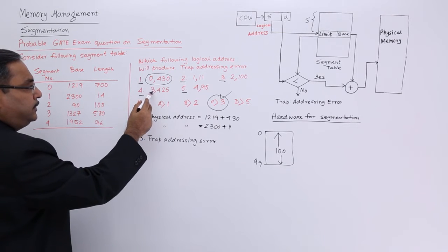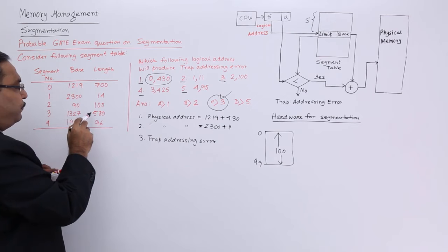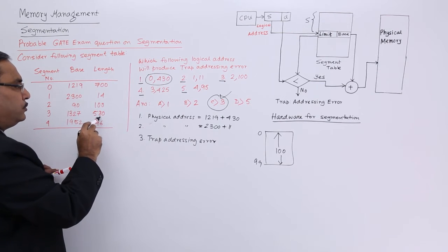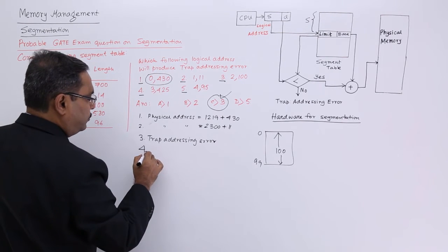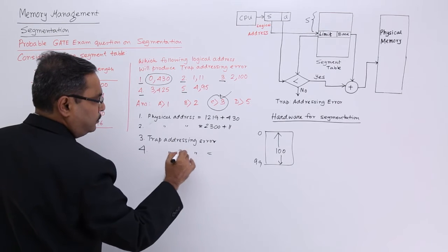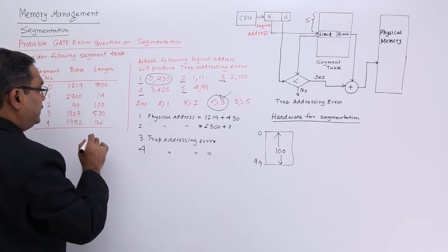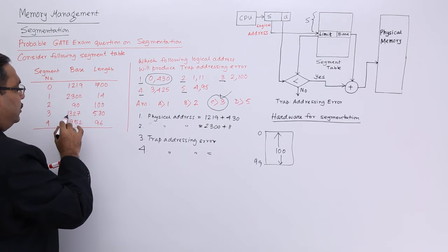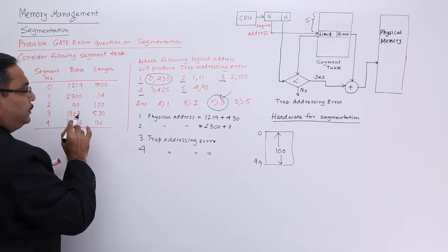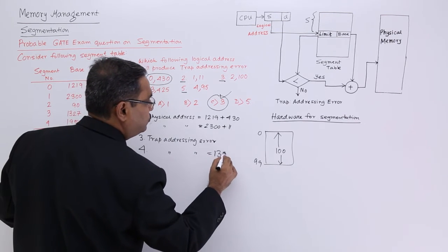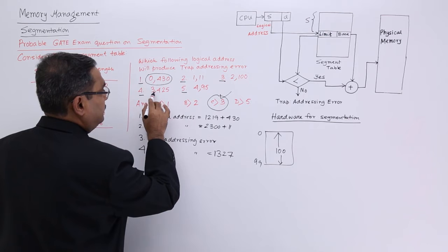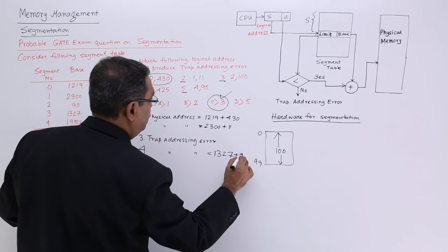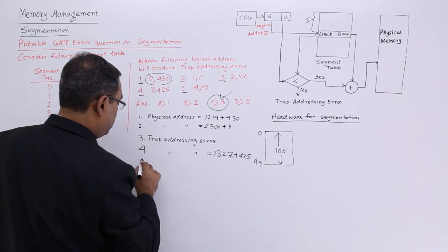Let me go for the other one: 3,425. So 425 is less than 580, so it is okay. The physical address will be 1327 plus 425.